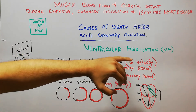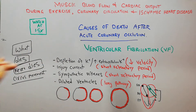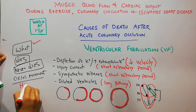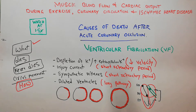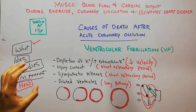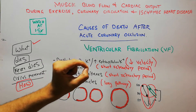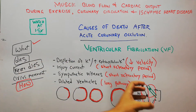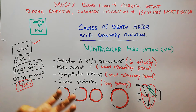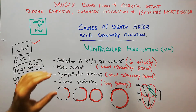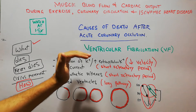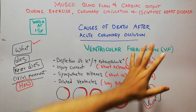Ventricular fibrillation is one of those conditions where there is not much time and the patient may die before reaching the hospital. VF can occur due to many conditions, but it occurs normally due to occlusion of the coronary vessels, which is basically ischemia. It may also occur due to electric shock, and other conditions which lead to ischemia may also cause VF.